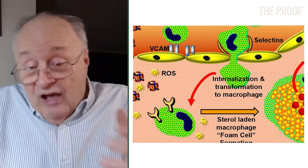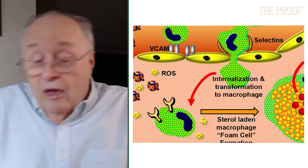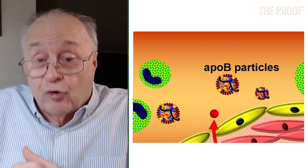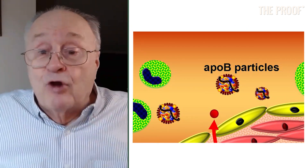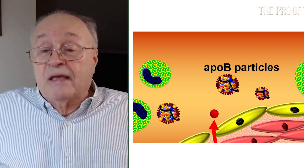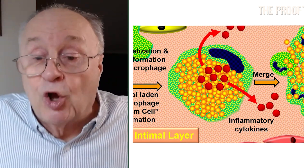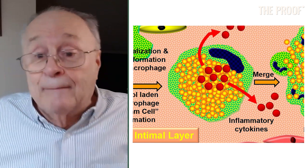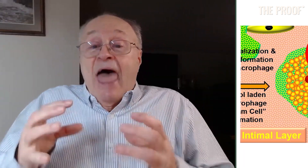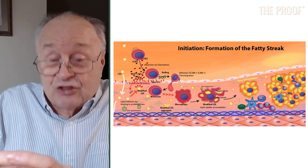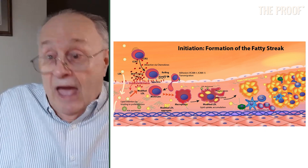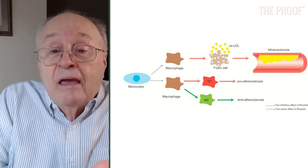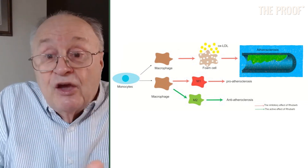And now if that macrophage keeps internalizing huge numbers of ApoB cholesterol-carrying particles, before you know it, the macrophage becomes super cholesterol-engorged. They're called foam cells because they look foamy under a microscope. And if you get a macrophage that turns into a foam cell and you get a few billion of those macrophages, that is plaque.